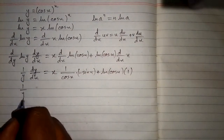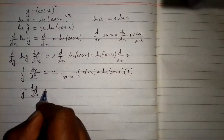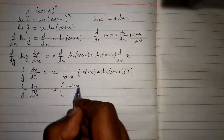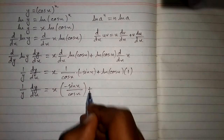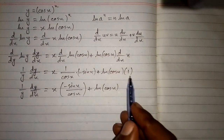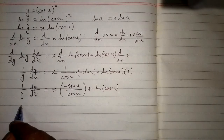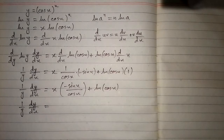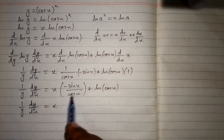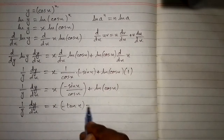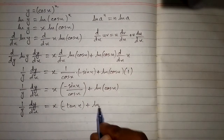Now we have 1 upon y times dy/dx is equal to x times minus sin x upon cos x, plus ln of cos x, because 1 times ln of cos x is ln cos x. We know that sin x upon cos x is tan x, so we have minus tan x, and then plus ln of cos x.